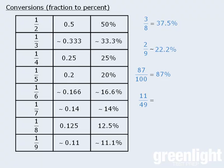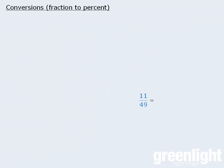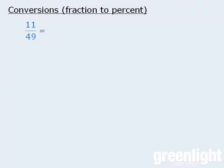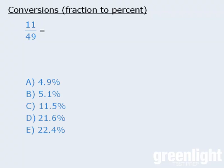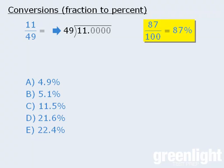How do we convert 11 over 49 into a percent? Let's say we're solving a question and the answer is 11 over 49, and we must convert this to a percent. Since converting fractions to percents is simple when the denominator is 100, let's find an equivalent fraction with 100 in the denominator. To find equivalent fractions, we multiply numerator and denominator by the same number — so what must we multiply 49 by to get 100?